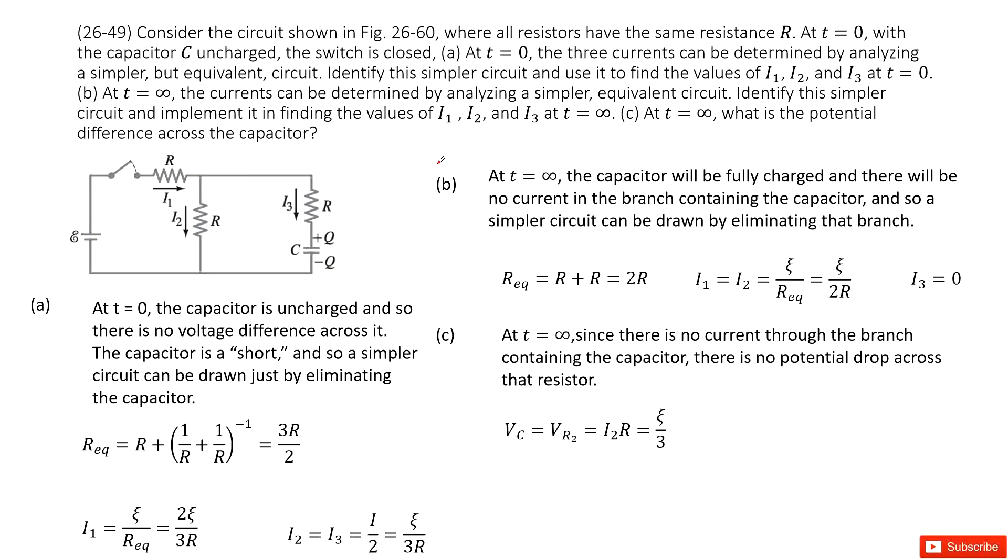Welcome to my channel. I'm Zhang Jingxu. Let's look at problem 49 in chapter 26. Chapter 26 is about DC circuits. We can see we have three resistors, one capacitor, and a battery is there.